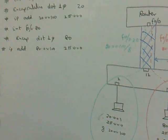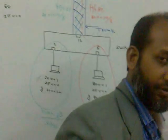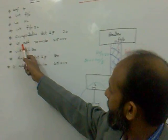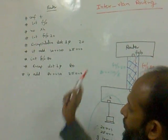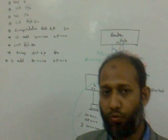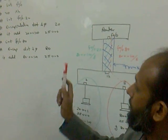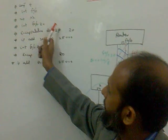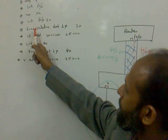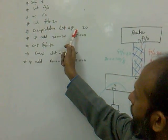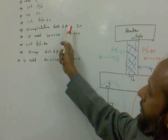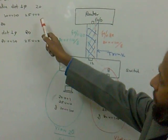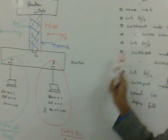There is an important troubleshooting note: if you apply the IP address on the sub-interface before the encapsulation, the router will not accept it. You must first enter the encapsulation dot1Q command with the VLAN number, and then apply the IP address.